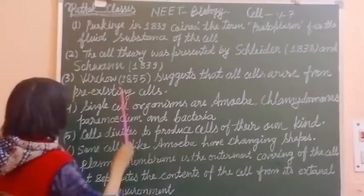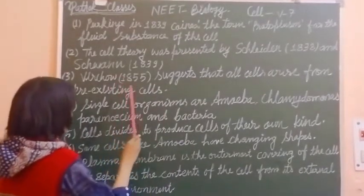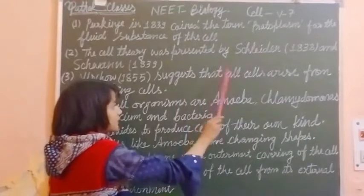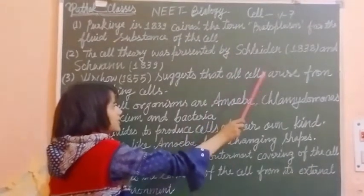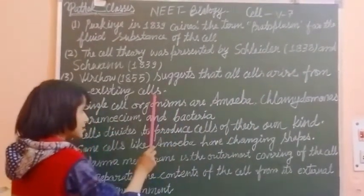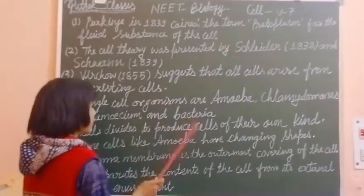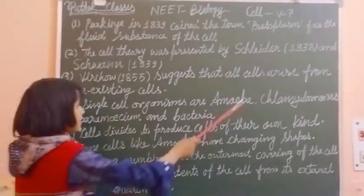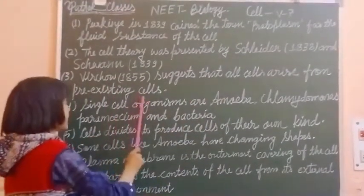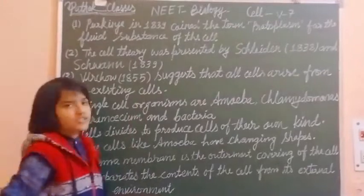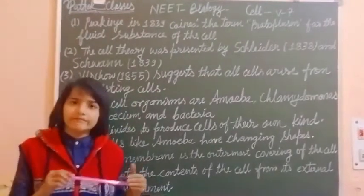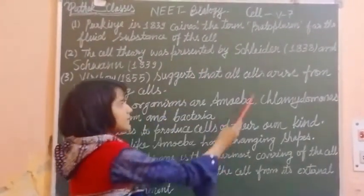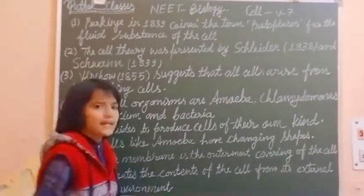Next, third point. Virchow in 1855 suggests that all cells arise from pre-existing cells.